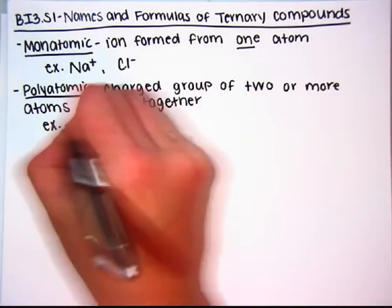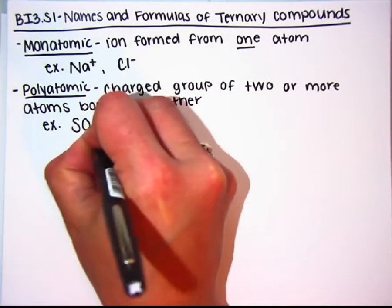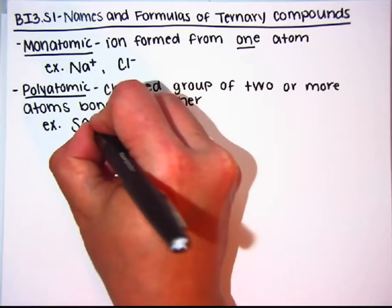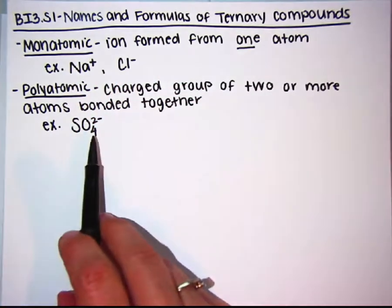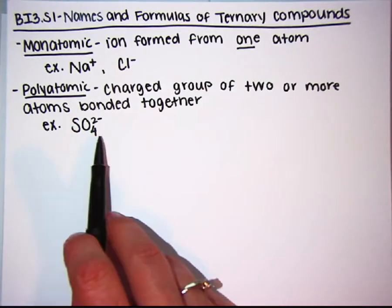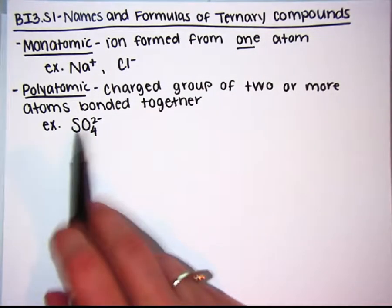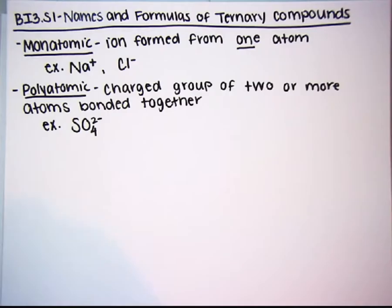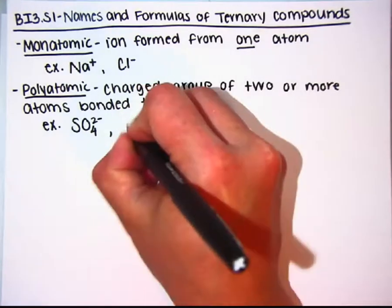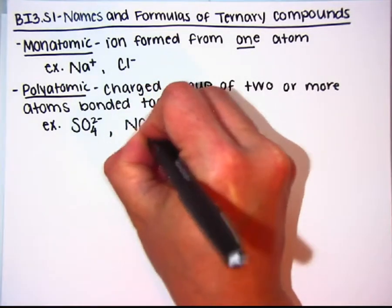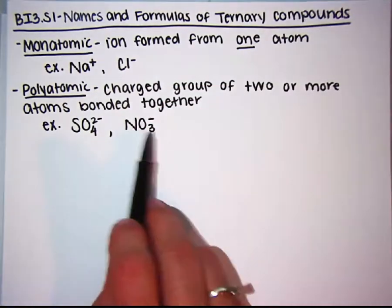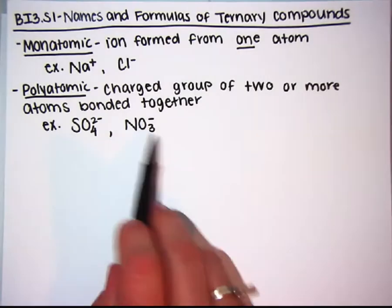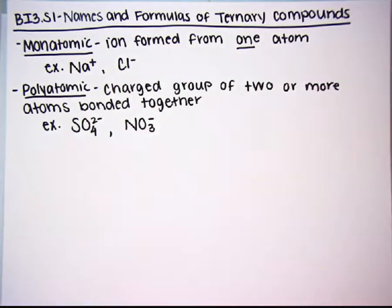An example of a polyatomic ion is sulfate. This would be one sulfur and four oxygens all bonded together. Together as a unit, it has a charge of negative two. Another example would be nitrate. This would be one nitrogen and three oxygens. Together as a unit, it has a charge of negative one.